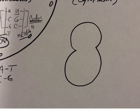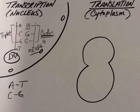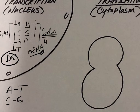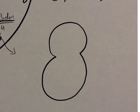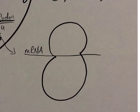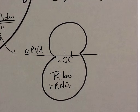So once our mRNA has got the poly-A tail and the 5' cap on there, it can make its way out of the nucleus through a nuclear pore, and it's going to hook up with a ribosome out in the cytoplasm. So we still have our mRNA here with our codon — which is UGC. This is our ribosome, and it works together with rRNA to oversee translation.